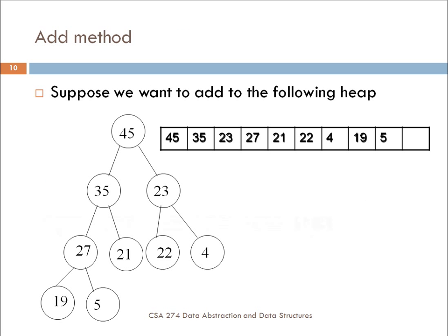Suppose we have the following heap, and I have here both the graph representation and the array representation, and suppose I wanted to add an element to this heap. The algorithm for this ends up being fairly straightforward, but it has a couple of different important steps. I'm going to end this episode here, and the next episode we'll talk about add, we'll talk about remove.